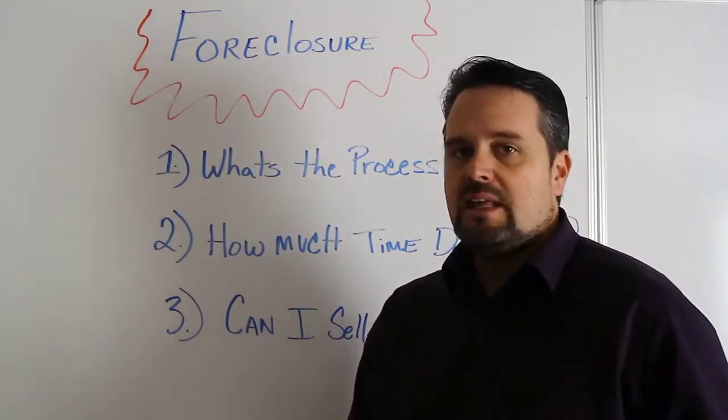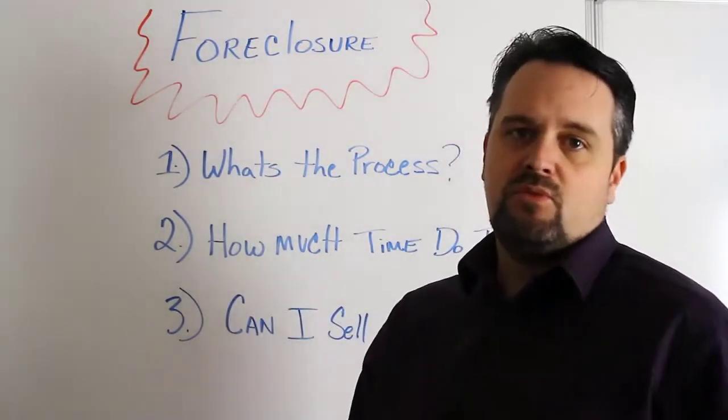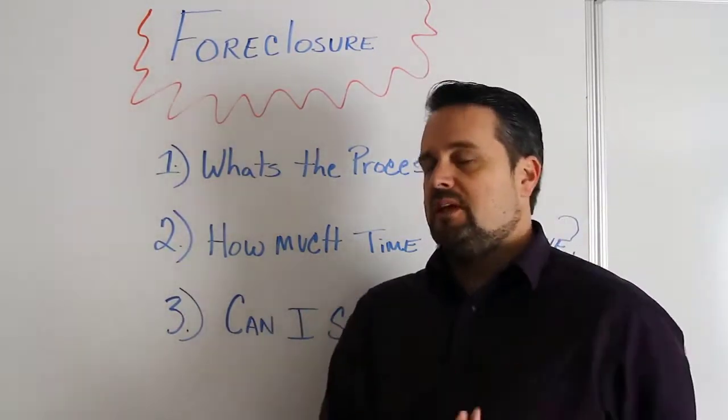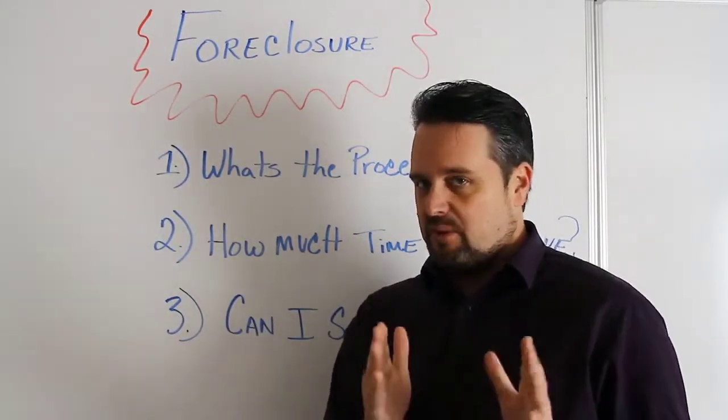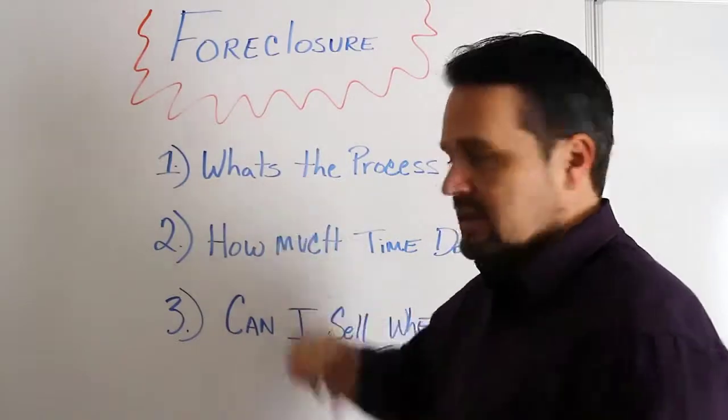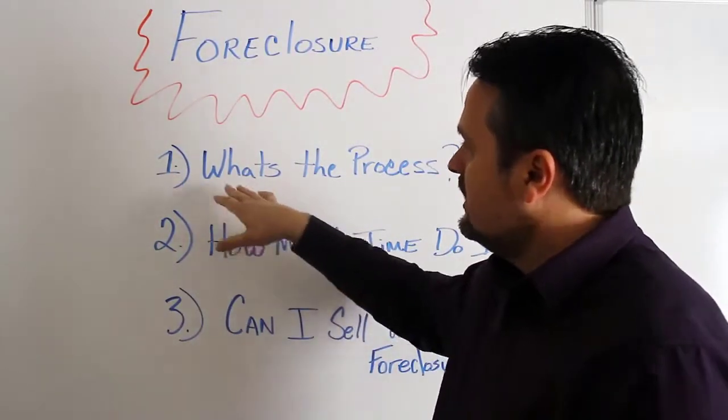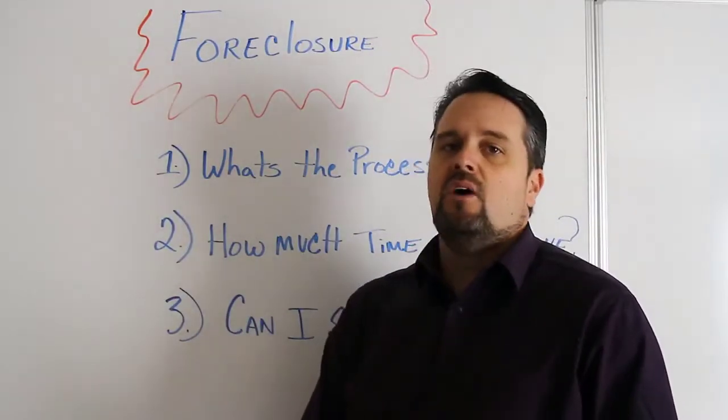First, they have to send you certified letters 21 days before the foreclosure date at a minimum. If you get certified letters in the mail, generally you're in foreclosure. That's sent into the attorney, and then they're going to send your house to be auctioned.